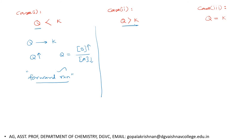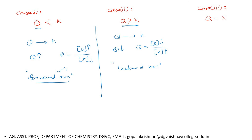Another situation: if Q is greater than K, Q must decrease to attain the value of K. For Q to decrease, the numerator should decrease and the denominator should increase — meaning reactant concentration must increase and product concentration must decrease. This means the reaction favors the backward direction. When Q is greater than K, the backward direction is favored to a larger extent.